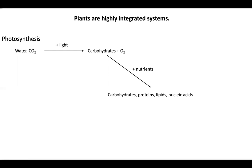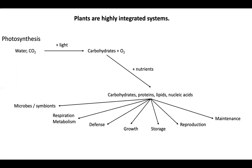With the addition of some nutrients, we can make more complex carbohydrates, make proteins, make lipids, and make nucleic acids. Now these four groupings are what we call macromolecules — four classes of macromolecules. And we use these resources for all sorts of things; there are so many uses within a plant. We could allocate some to microbes and symbionts in the soil — the fungi and bacteria living in the soil on the plant roots.